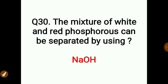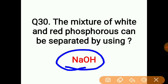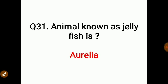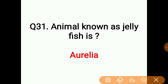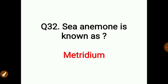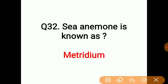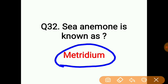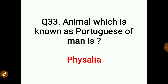The mixture of white and red phosphorus can be separated using sodium hydroxide (NaOH). The animal known as jellyfish is called Aurelia. The sea anemone is also known as Metridium.